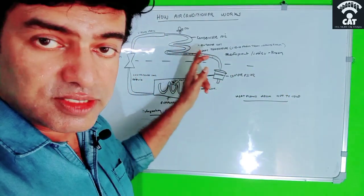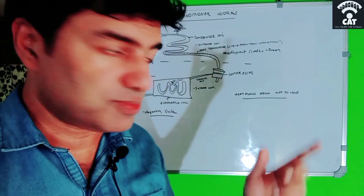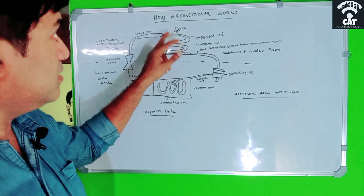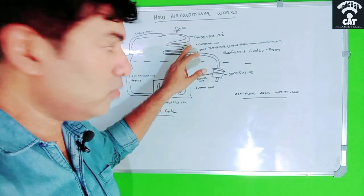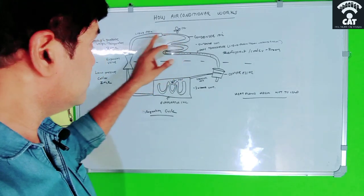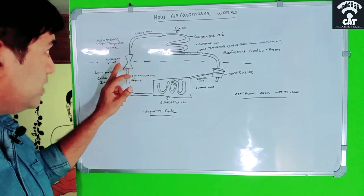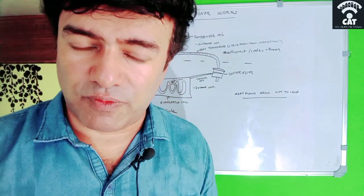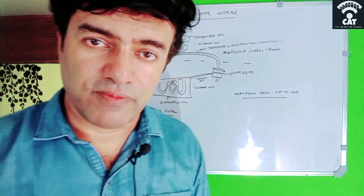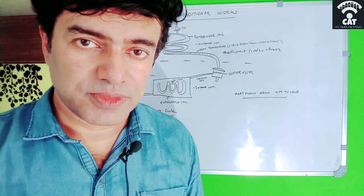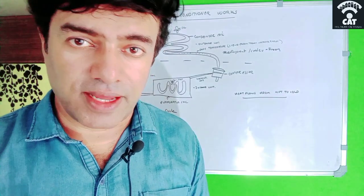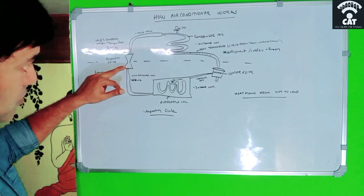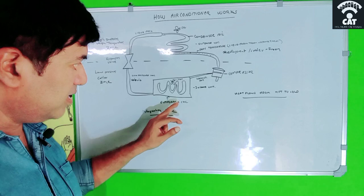According to thermodynamic law, heat flows from a hotter area to a cooler area. So the outside air temperature must be lower than the refrigerant temperature in the condenser coil for heat transfer to occur. After heat transfer at the condenser coil, the refrigerant travels in liquid state through the pipe to the expansion valve, where both the temperature and pressure become very low — it becomes cooler than before.